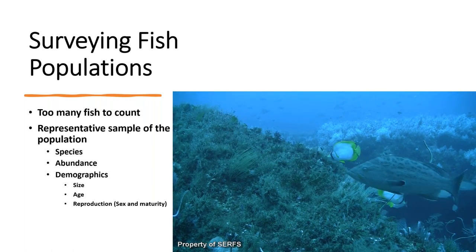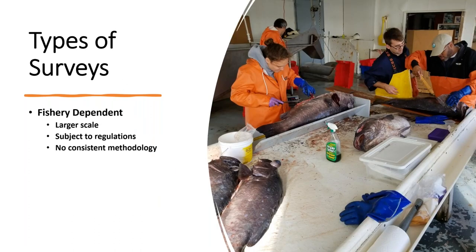There are a few methods for surveying fish populations, and I'm going to talk about two of them today. The first is fishery-dependent surveys — as the name implies, they rely on commercial and recreational fisheries to catch fish, and then data are collected to characterize the fish populations. One advantage is the extremely large scale: an estimated 9.3 billion pounds of seafood are landed commercially each year worth roughly 5.5 billion dollars, with an additional 14.3 million saltwater anglers making an estimated 187 million trips a year. The drawback is that these surveys are subject to fishery management regulations.